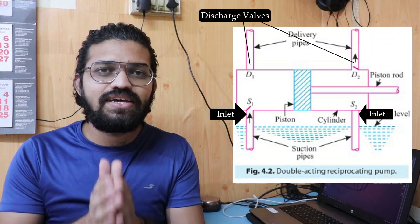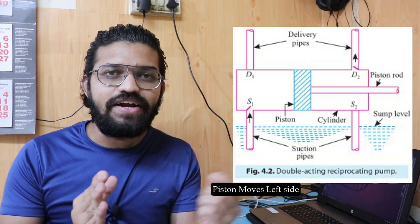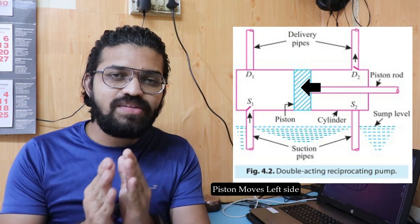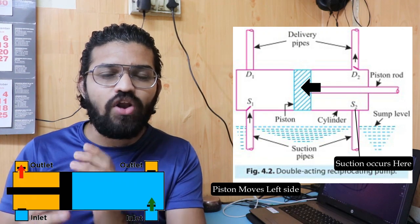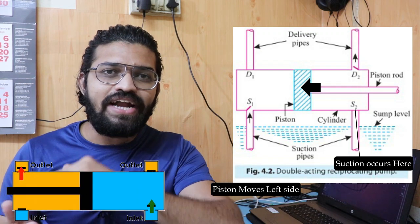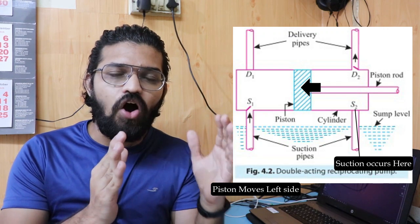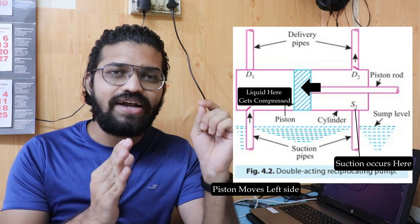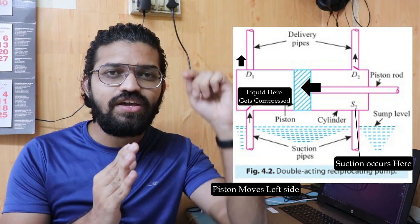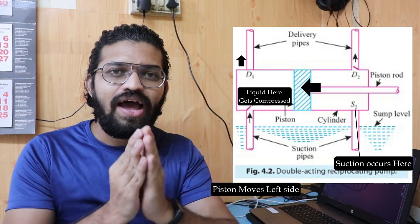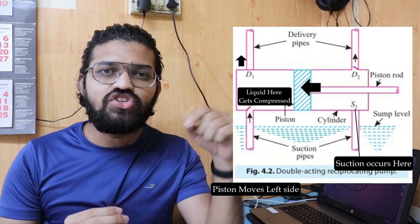As the piston reciprocates — scenario one: the piston moves towards the left side. As it moves left, suction is created at the back side of the piston and the inlet valve at the back side opens. Liquid enters the cylinder, and at the same time the liquid on the left side of the piston gets pressurized. The delivery valve on the left side opens and liquid is discharged through that discharge valve.